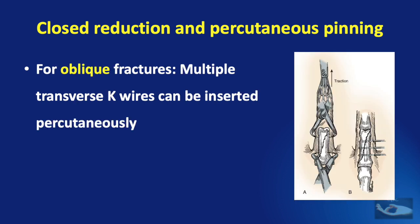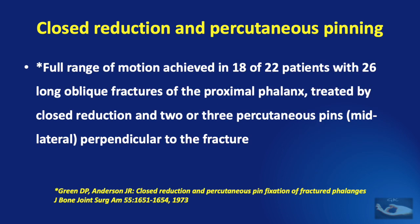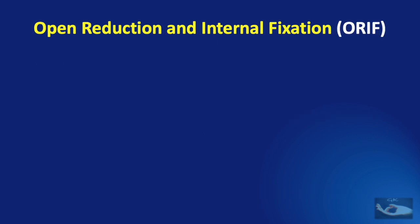In addition, for oblique fractures, multiple transverse K-wires can be inserted percutaneously. By this technique, full range of motion was achieved in 18 of 22 patients with 26 long oblique fractures of the proximal phalanx treated by closed reduction and two or three percutaneous pins perpendicular to the fracture. However, there are some situations where none of these techniques will work, and in those situations we need to do an open reduction and internal fixation.